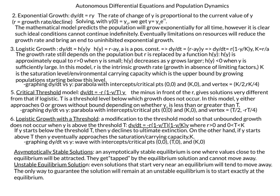The critical threshold model starts from the logistic growth equation. We put a minus sign in front, and instead of k, we use T. T becomes a threshold level below which growth does not occur. So in this model, y either approaches zero or grows without bound, depending on whether y-naught is less than or greater than T — meaning the population needs to exceed some threshold before it can grow.